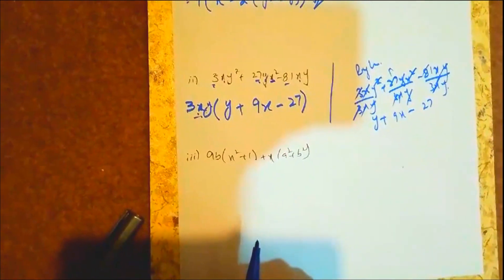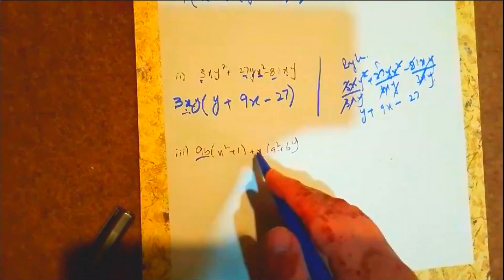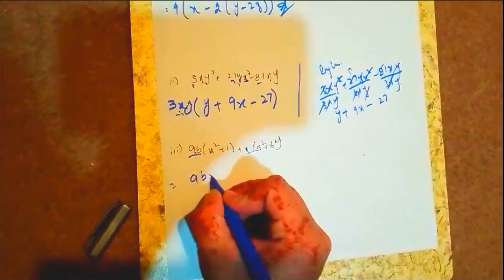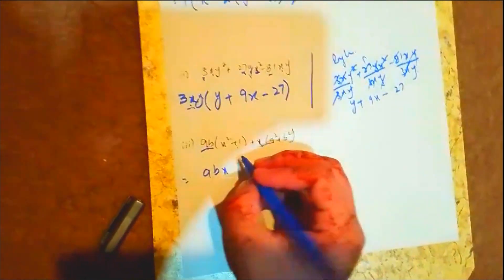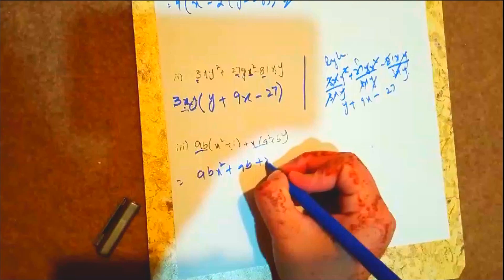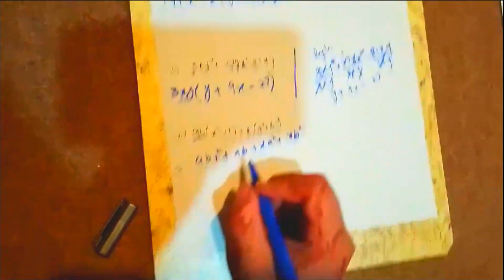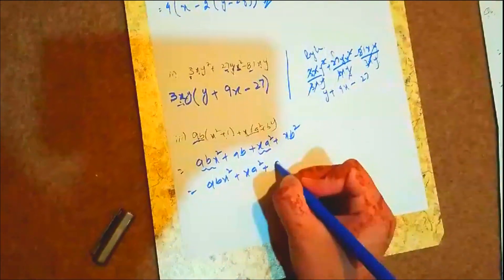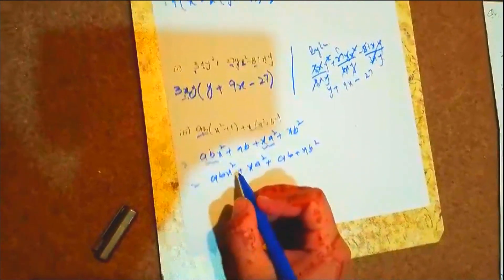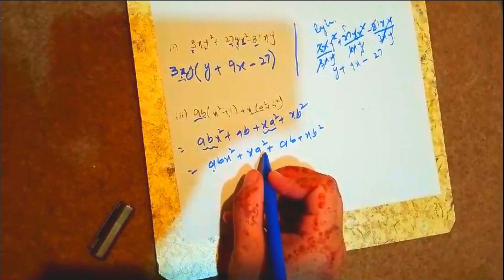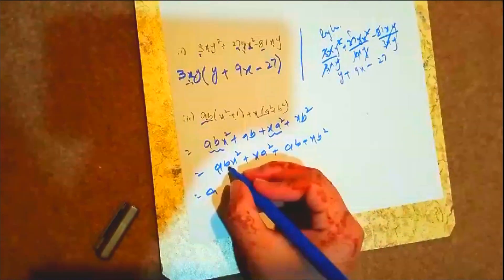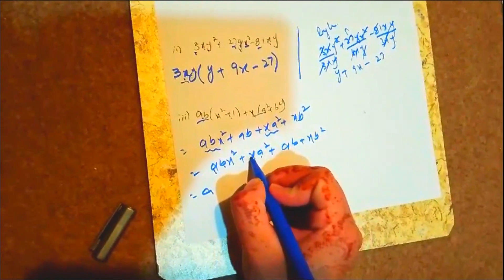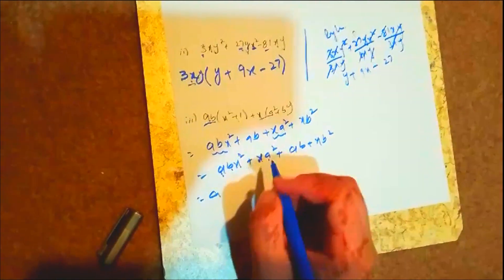Part 3: ab(x² + 1) + x(a² + b²). We can multiply first then find common factors. ab(x²) + ab(1) + x(a²) + x(b²). Now we can rearrange terms: abx² + xa² + ab + xb². We can factor by grouping.